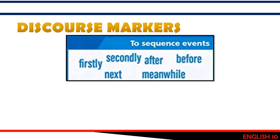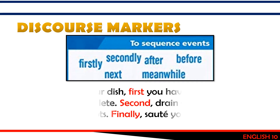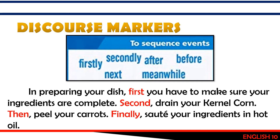The third group of discourse markers is used to sequence events. Examples include: firstly, secondly, next, after, before, meanwhile. For example: 'In preparing your dish, first you have to make sure your ingredients are complete. Second, drain your kernel corn. Then fill your carrots. Then finally, sauté your ingredients in hot oil.' The discourse markers used are: first, second, then, and finally — showing the steps in order.